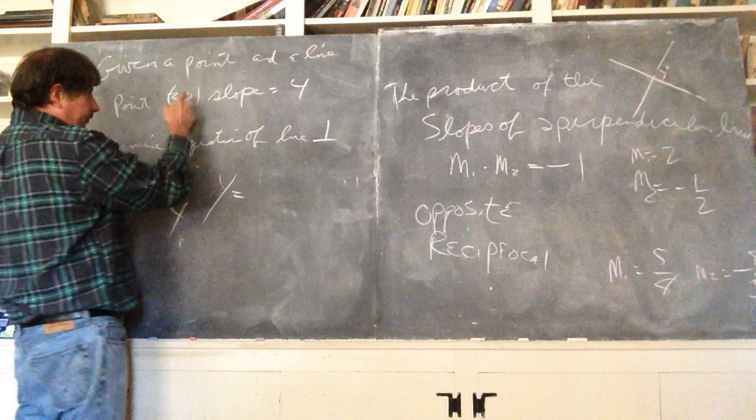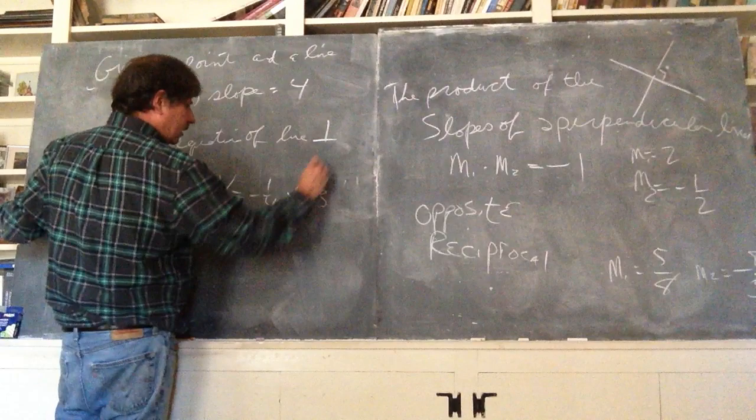Now you have a point and a slope, y minus zero equals negative one-fourth times x minus three. And there you go.